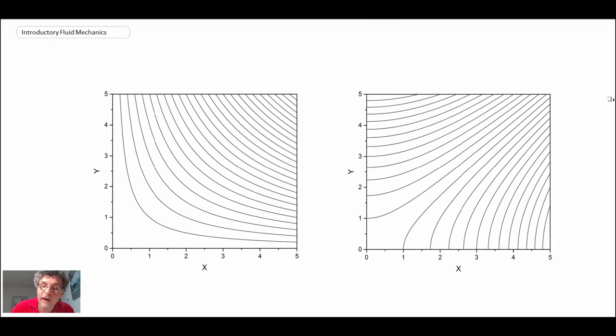And that was the one where we came up with the stream function and the potential function. So on this curve, on the left, is our stream function, psi was xy. And I've done this with a equals one and the constant equal to zero in the equation.